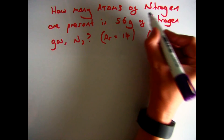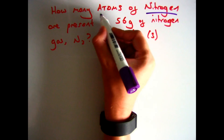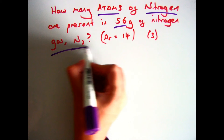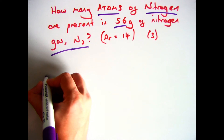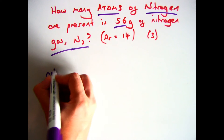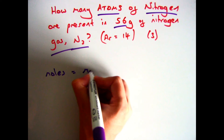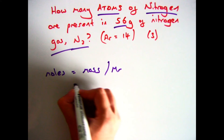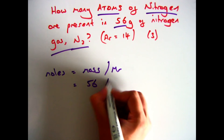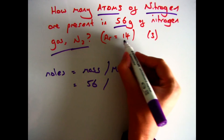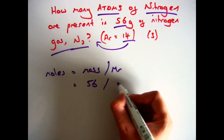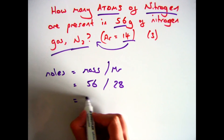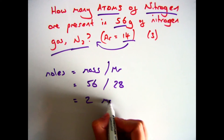There's one more example: 'How many atoms of nitrogen are present in 56 grams of nitrogen gas?' This is trickier because it asks for atoms, not particles. First, work out the moles: moles = mass divided by Mr. The formula mass of N₂ is 14 × 2 = 28. So 56 divided by 28 gives 2 moles.